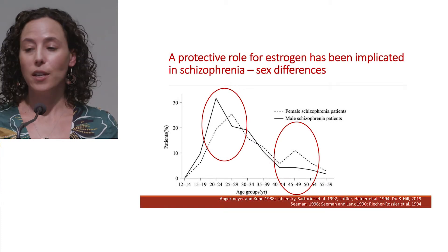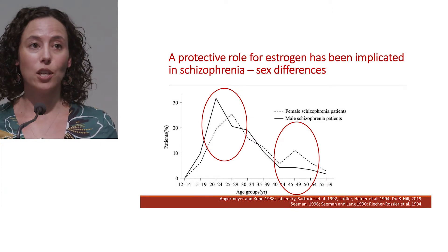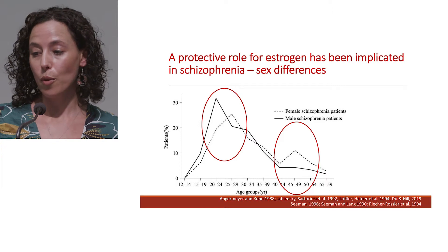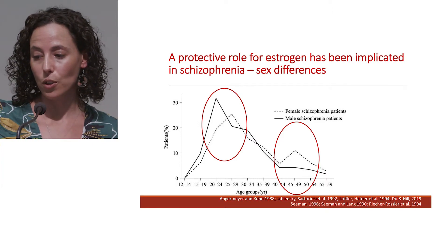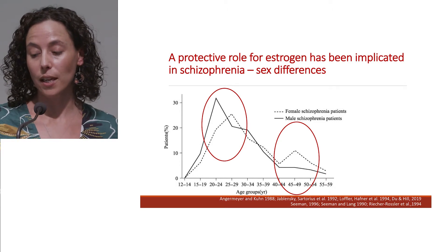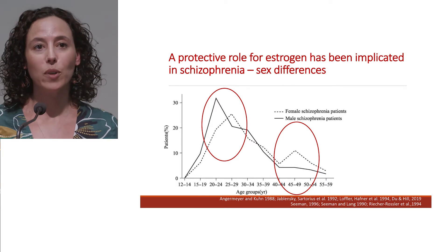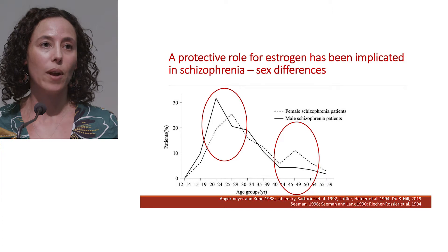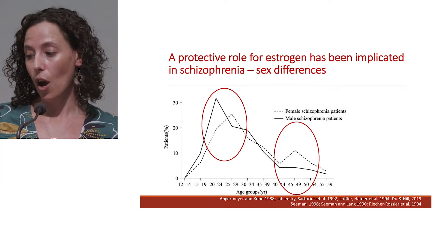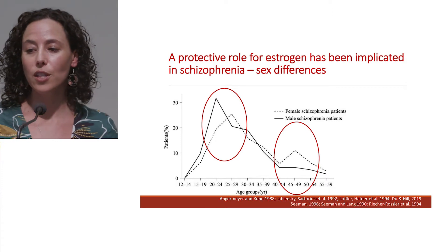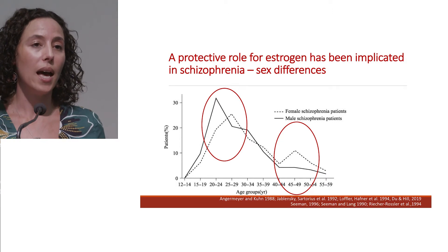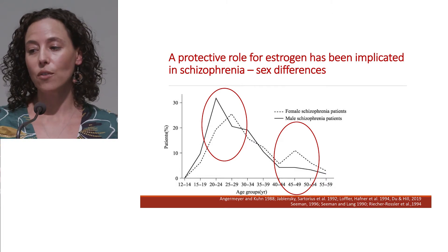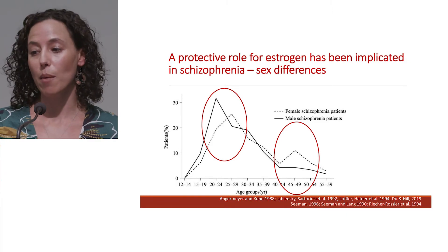For a few decades there's been a hypothesis that oestrogen provides some sort of protection for people with schizophrenia. Some of this research comes from studies showing the peak onset for males is a few years before the peak onset in females, suggesting oestrogen in females might provide some protection. Females with schizophrenia also have a second peak of onset corresponding to menopause years, when oestrogen levels drop. Symptoms of schizophrenia can also be exacerbated during the menstrual period and following pregnancy when oestrogen levels are lower.